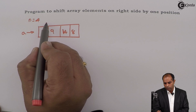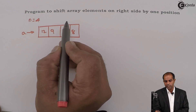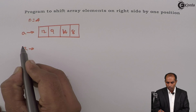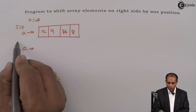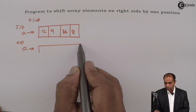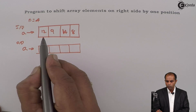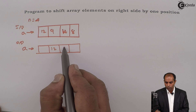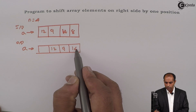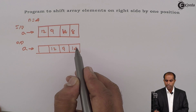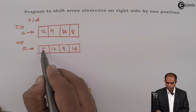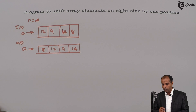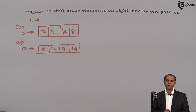I need to shift the elements of the array towards the right hand side by one position. The new output array has to have these contents. When I shift this, 12 goes to the other side, 9 goes in the place of 14, 14 goes in the place of 8, and 8 will now occupy the last position. This is the output array.